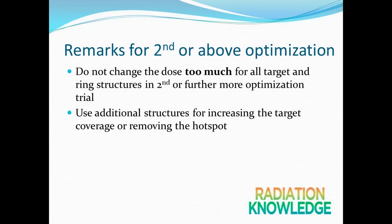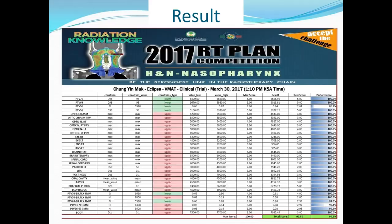For the second optimization, after the first pass, do not change the doses too much for targets and ring structures. You can change OAR priorities slightly as small amendments. Use additional structures to increase target coverage and remove hotspots. Priorities for these additional structures should be around 80 to 100. You can then see my final results for this clinical plan.